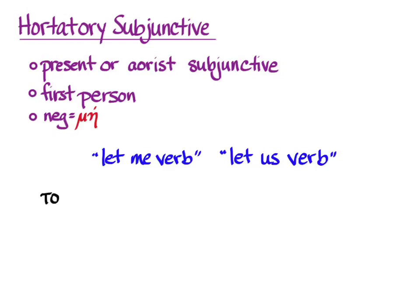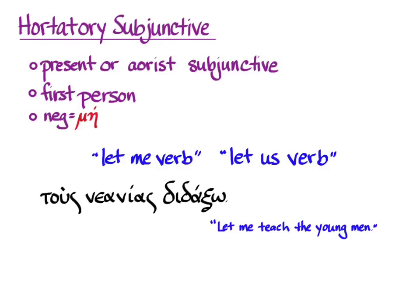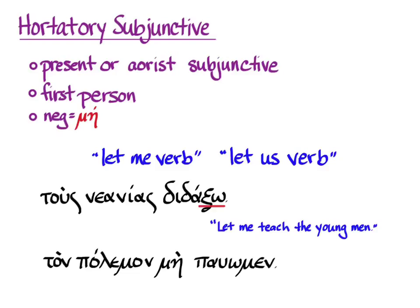The default translation is 'let me verb' or 'let us verb.' For instance, 'tous neanias didaxō' means 'let me teach the young men.' This could, of course, also be the future indicative — 'I will teach the young men' — so context will have to tell you which to choose. Here's another example: 'ton polemon mē pausōmen' means 'let us not stop the war.' You can encourage yourself or a group of people with you to do anything with the hortatory subjunctive.